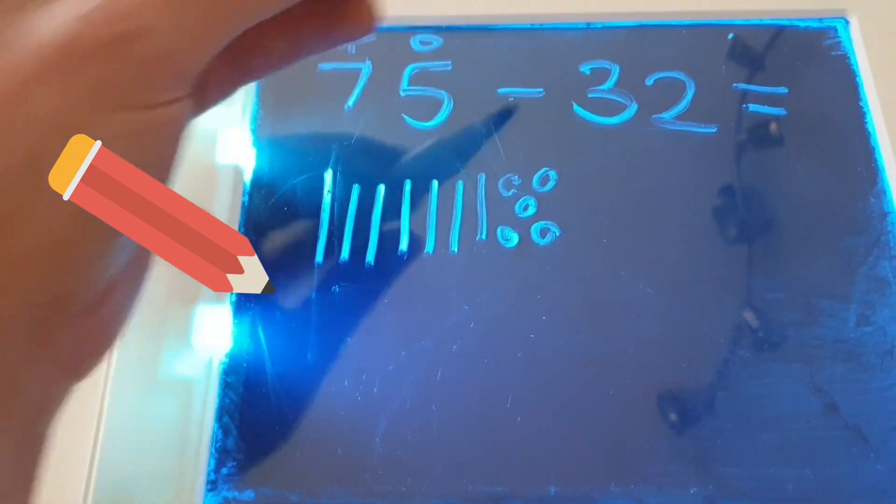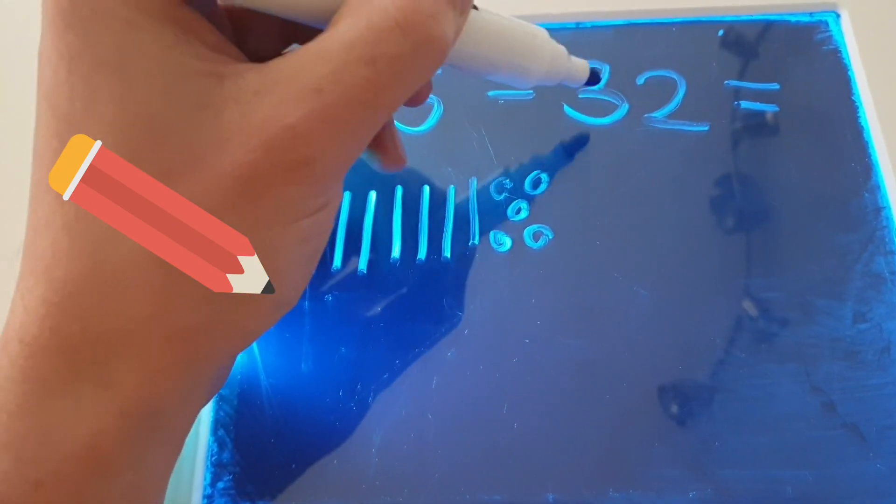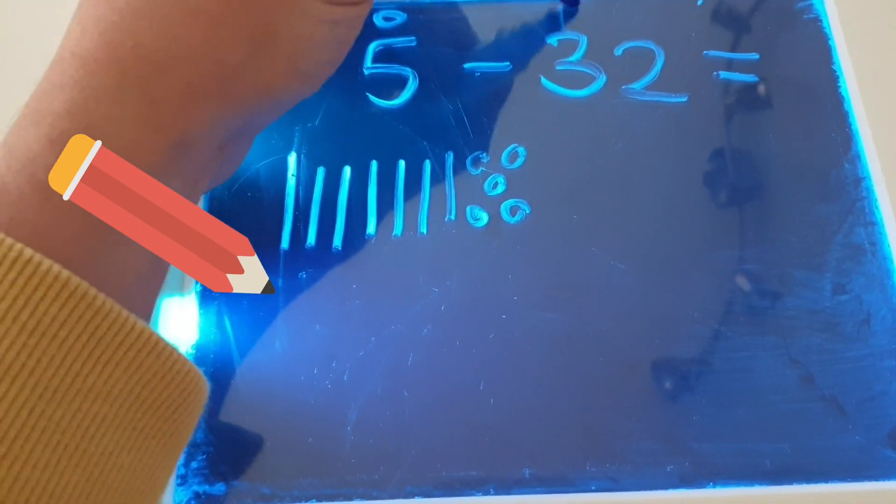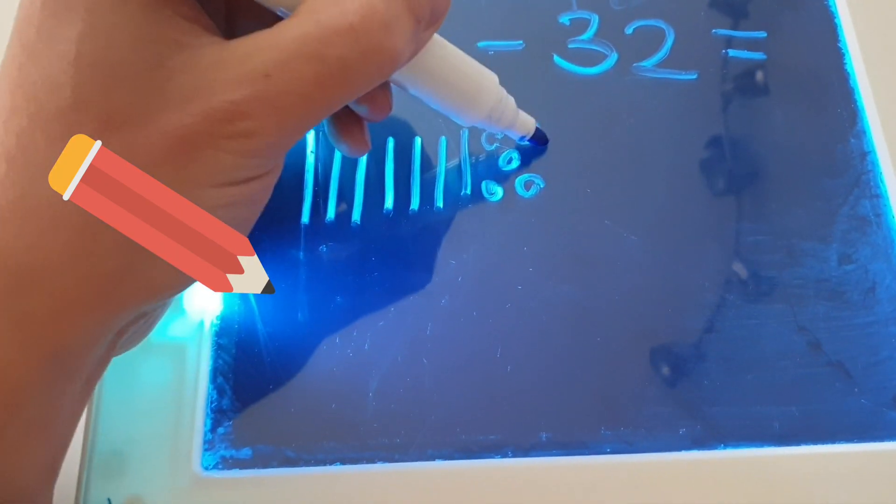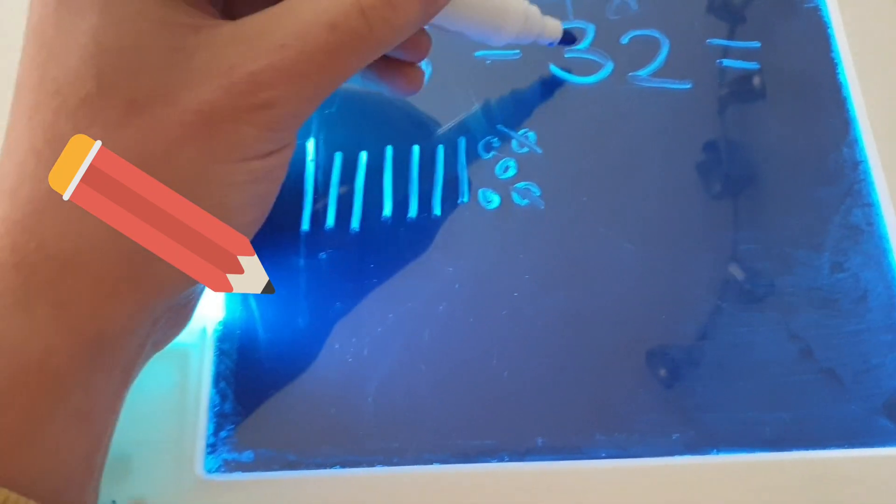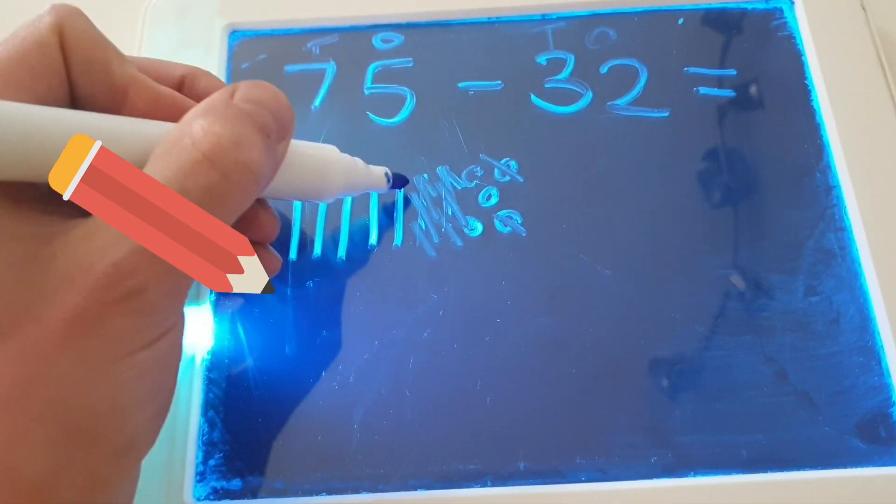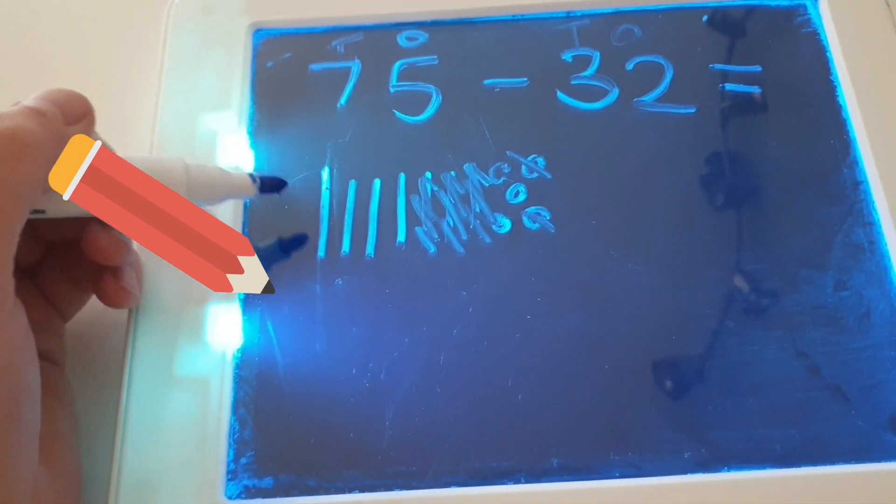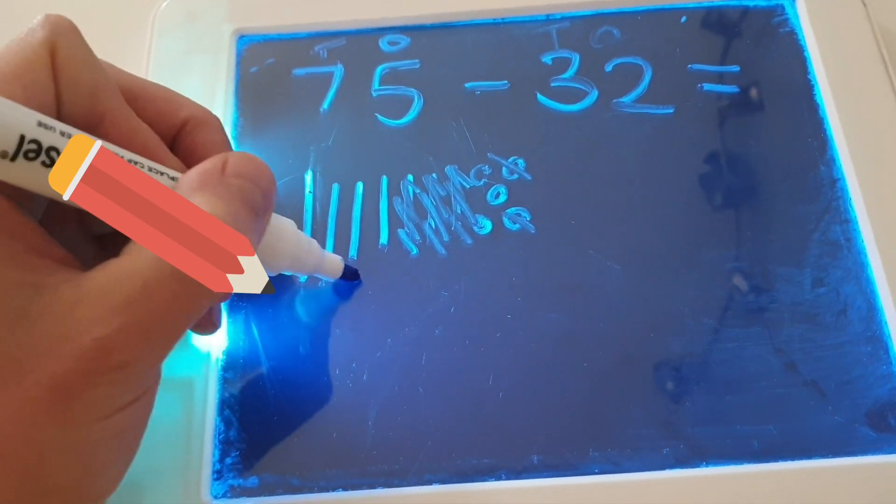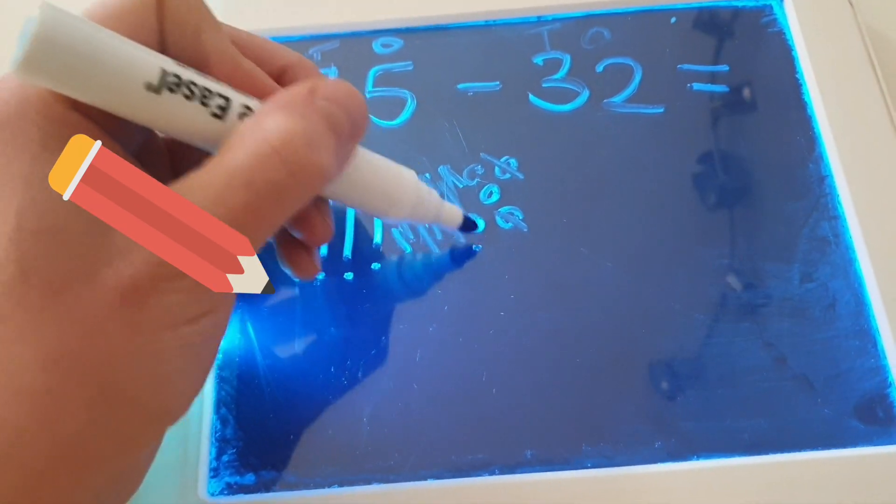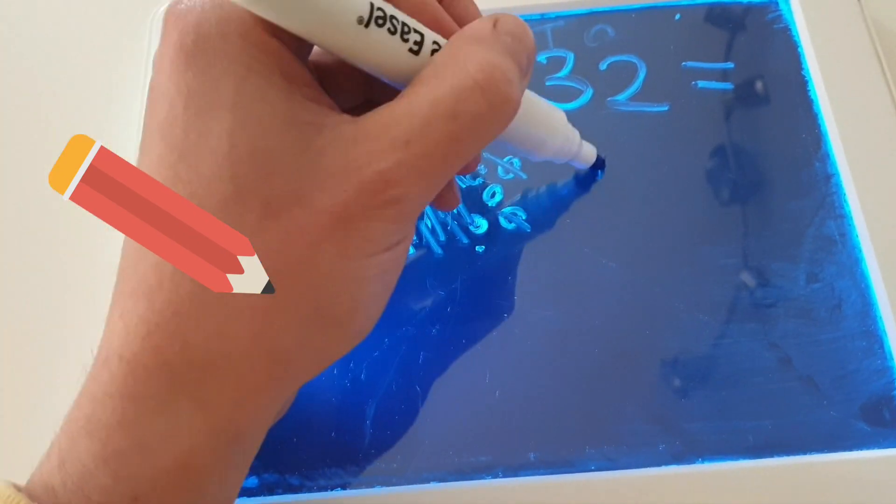Now I need to subtract my 32. So I've got three tens and two ones. I'm going to start with my ones. One, two, and then my three tens. Ten, twenty, thirty. What am I left with? Let's count together. Ten, twenty, thirty, forty, forty-one, forty-two, forty-three.